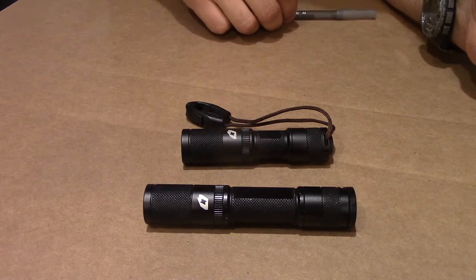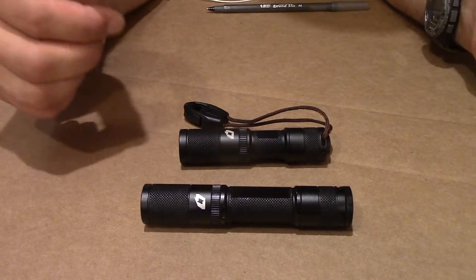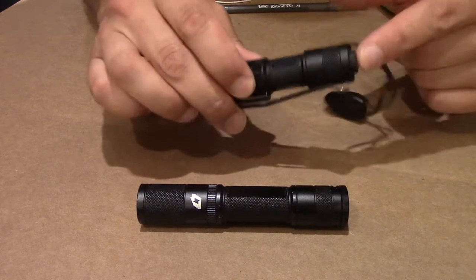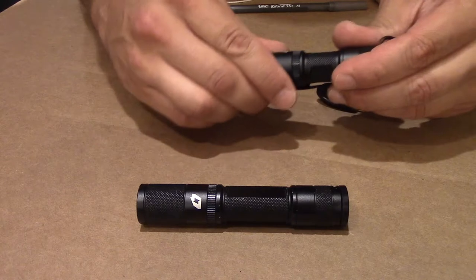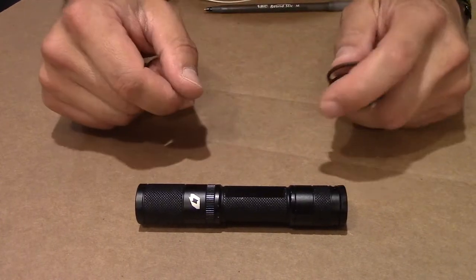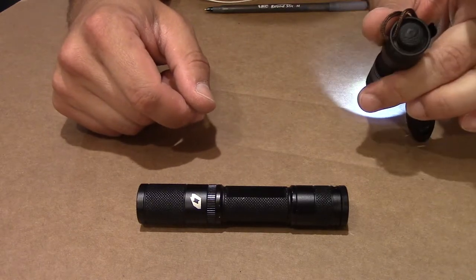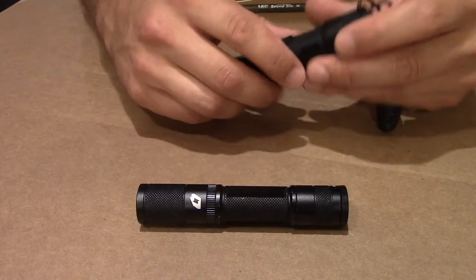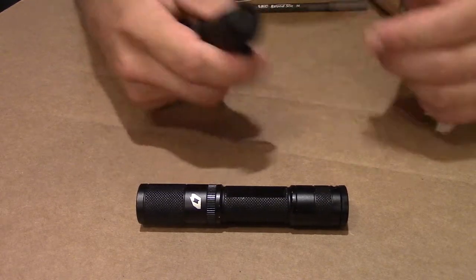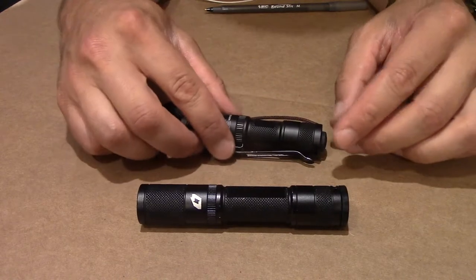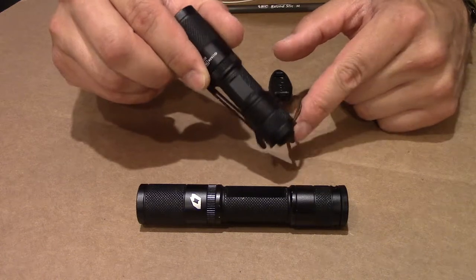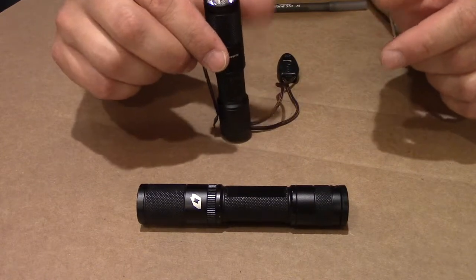Alright, so what it is for according to the manufacturer is it takes the Quark Tactical, which is a forward clicky tail cap which everybody loves because it has the momentary on and also has a one-handed push click that stays on, as opposed to something like a twisty where you have to use two hands. The only thing about this is you see this button here protrudes quite noticeably from the tail cap, which means it doesn't tail stand.